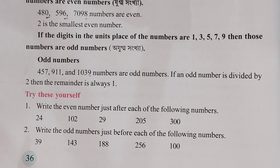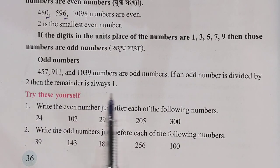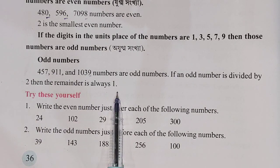If an odd number is divided by 2, then the remainder is always 1.